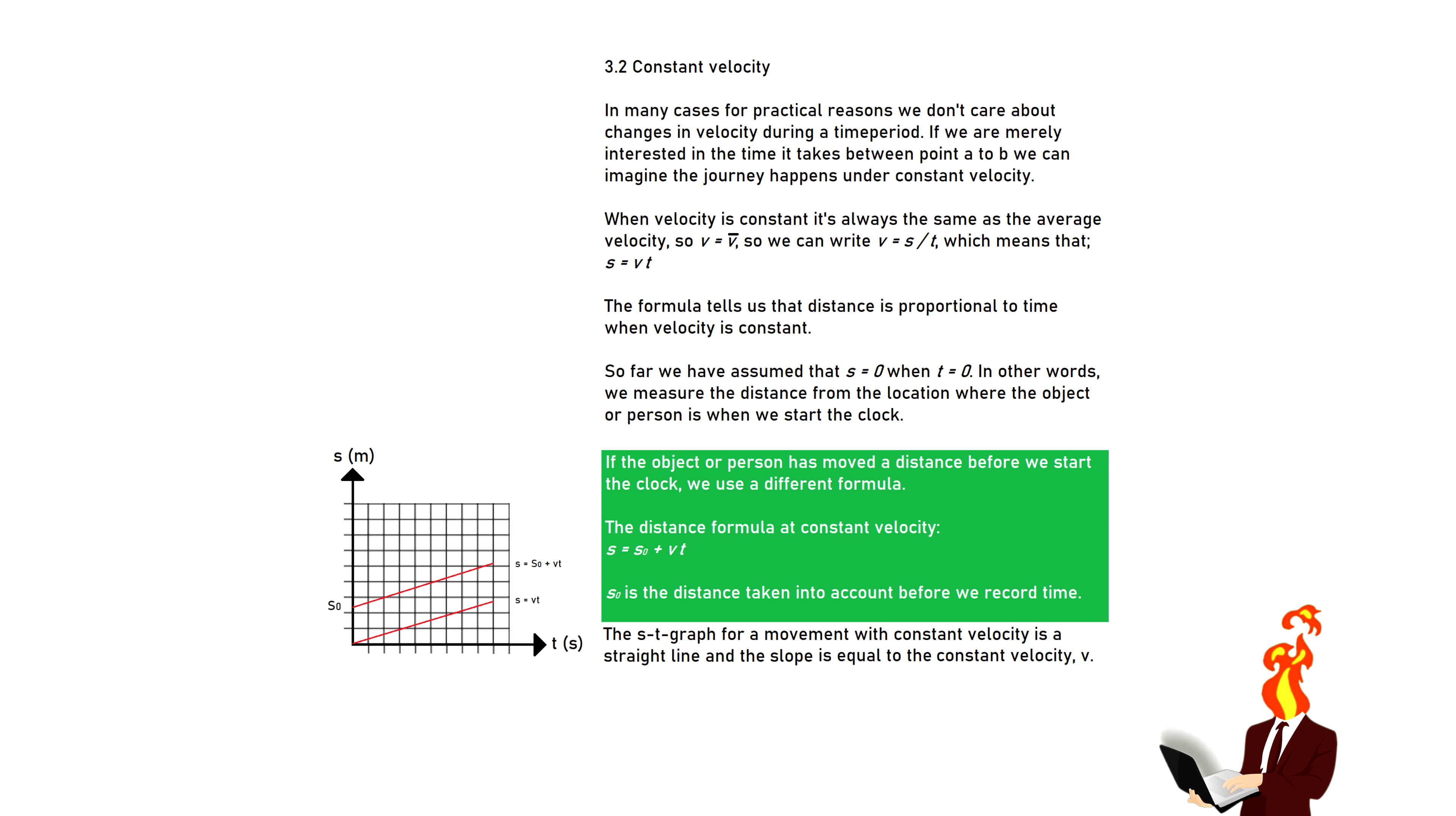So far, we have assumed that S equals zero when T equals zero. In other words, we measure the distance from the location where the object or person is when we start the clock. If the object or person has moved a distance before we start the clock, we use a different formula.